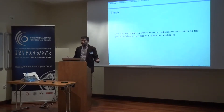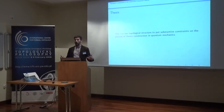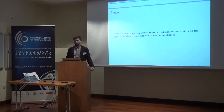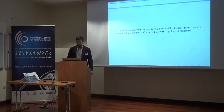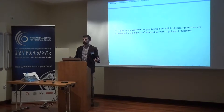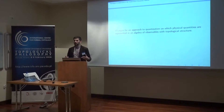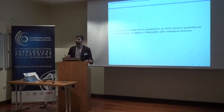What I'm going to argue today is that we can use topological structure on the class of physical quantities or observables to put substantive constraints on this process of theory construction — that is, the process of quantization. I'll argue for an approach to quantization on which the physical quantities associated with some system are represented in an algebra of observables that comes with topological structure.